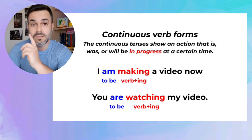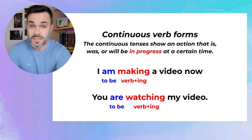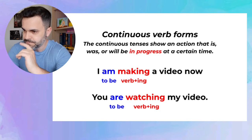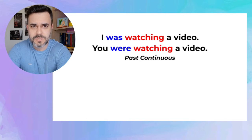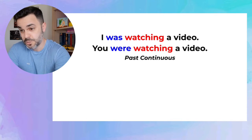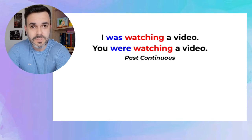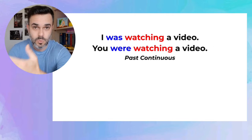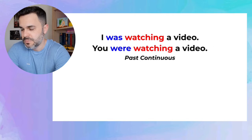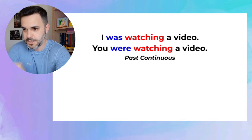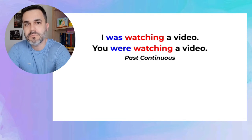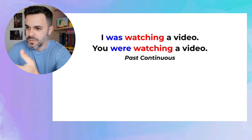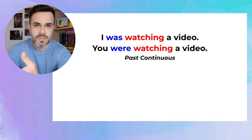However, the present continuous is not the only continuous tense there is. For continuous actions in the past, you should use the past continuous, which is the verb 'to be' in the past — was, were — plus the main verb plus ING. For example: watching. I was watching a video. You were watching a video.